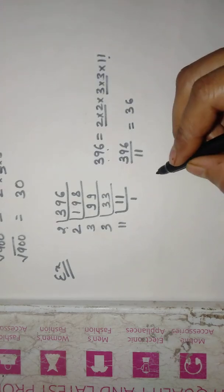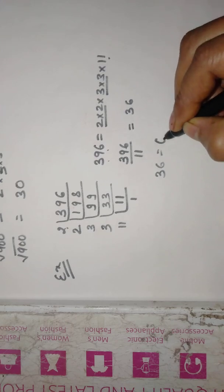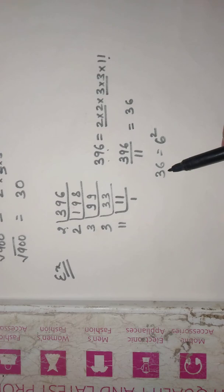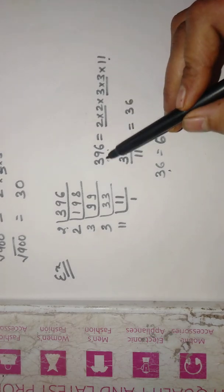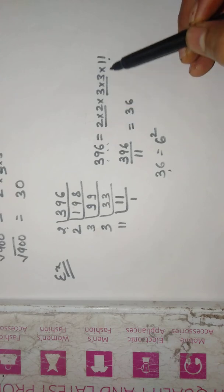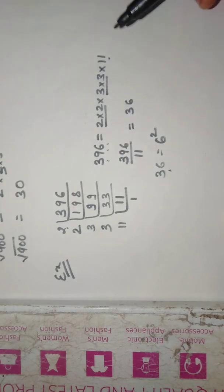And we know that 36 is the square of 6. So we get that 36 is a perfect square number. 396 is not a perfect square.